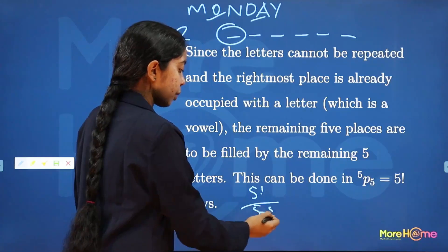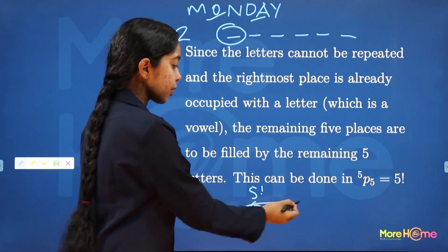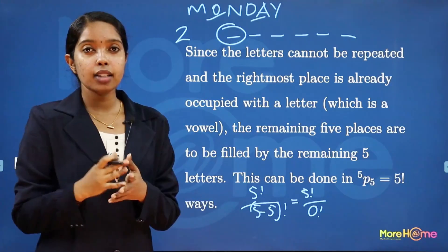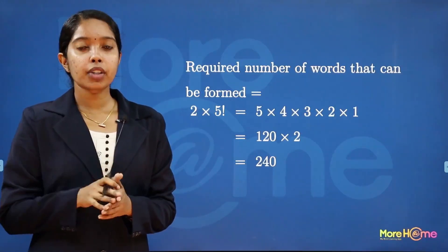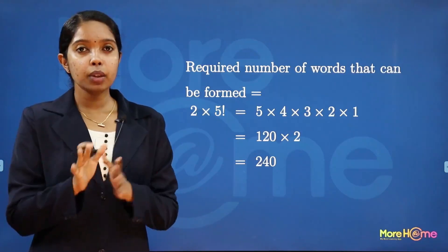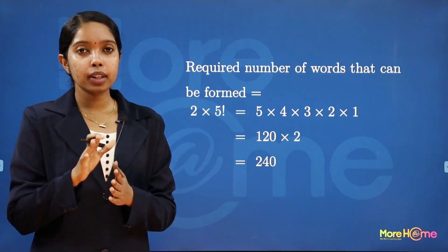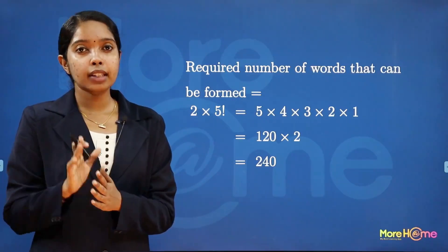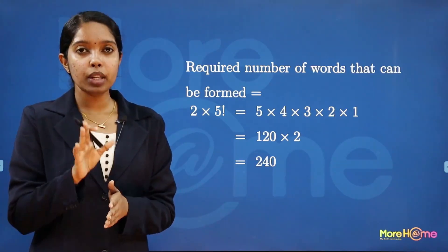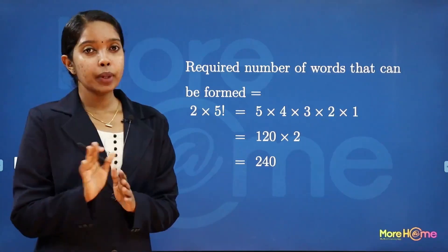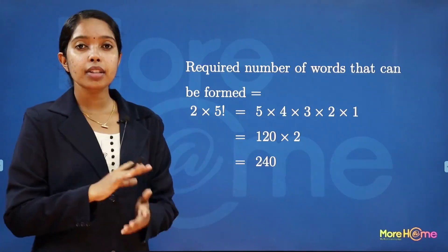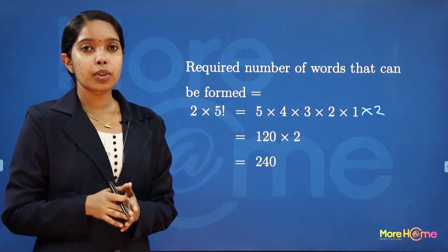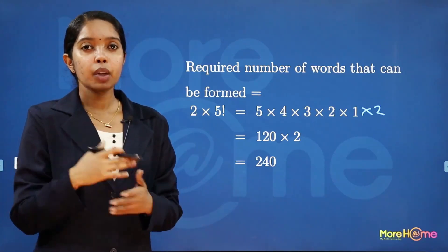5P5 equals 5 factorial divided by 5 minus 5 factorial, which is 0 factorial, and 0 factorial equals 1. So 5P5 equals 5 factorial, which equals 120. The first place can be filled in 2 ways, and the remaining 5 places in 5 factorial ways. So total words = 2 into 5 factorial = 2 into 120 = 240 arrangements.